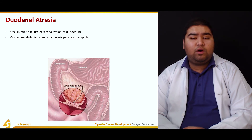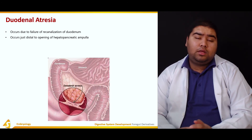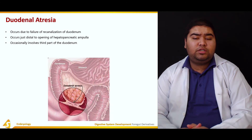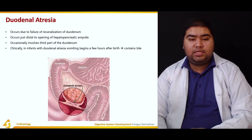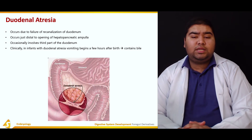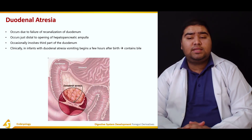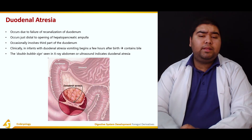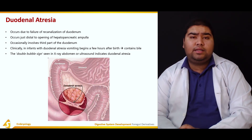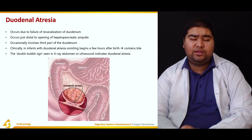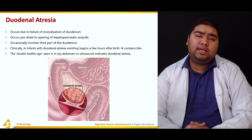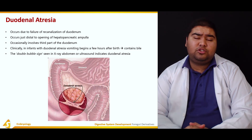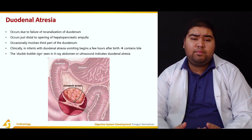Duodenal atresia most commonly occurs just distal to the opening of the hepatic or pancreatic ampulla, and it occasionally involves the third part of the duodenum. Clinically, in infants with duodenal atresia, vomiting begins just a few hours after birth and the vomitus contains bile. The double bubble sign is seen on X-ray abdomen and ultrasound, which is indicative of duodenal atresia. It is an important clinical finding requiring surgical correction as soon as it is identified so that the growth of the baby is not impaired.